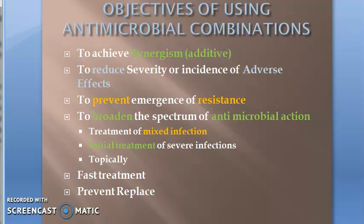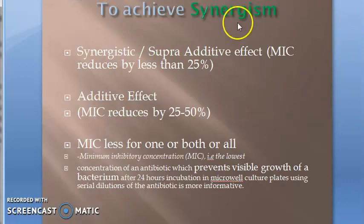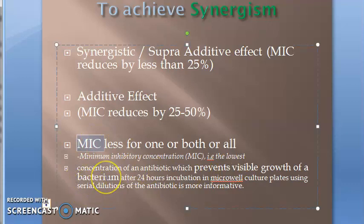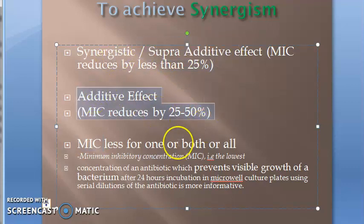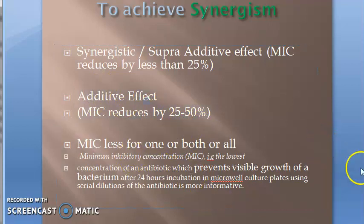The first objective — synergism — means an additive or supra-additive effect. MIC stands for minimum inhibitory concentration. When you combine two antimicrobial agents, you need very little quantity of each because of the presence of the other. If the MIC reduces to below 25%, it is called a supra-additive effect. If it reduces from 25–50%, it is called an additive effect.